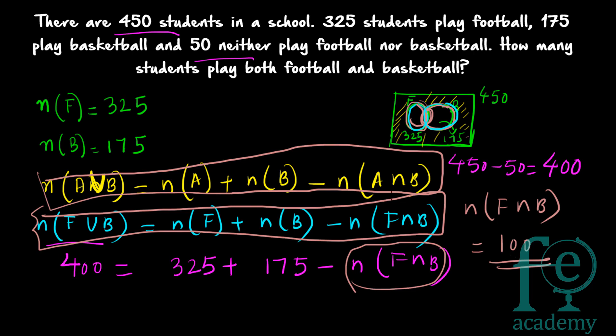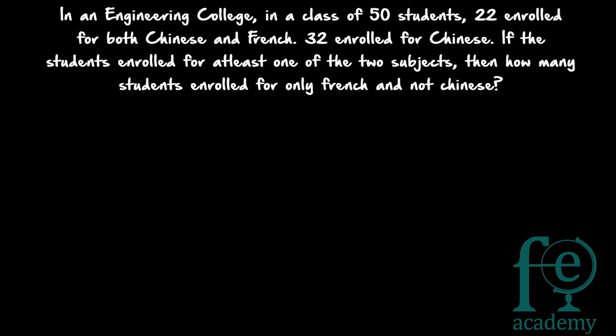Now question number two: in an engineering college, in a class of 50 students, 22 enrolled for both Chinese and French, 32 enrolled for Chinese. If the students enrolled for at least one of the two subjects, how many students enrolled for only French and not Chinese? Since all 50 students study at least one subject, there are no students outside both circles.